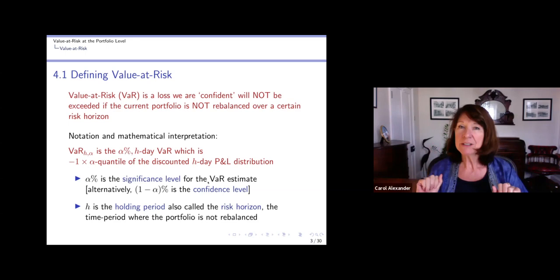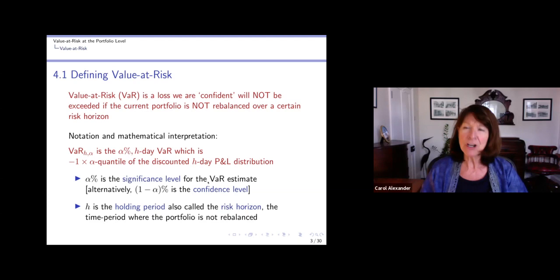Now 'confident' is put in inverted commas here because it's actually associated with a statistical confidence interval. So in fact, we have to have a parameter called alpha for the value at risk that measures how confident we are. Some people say that alpha is 99%, some people equivalently say that alpha is 1%, so let's just clear up that confusion.